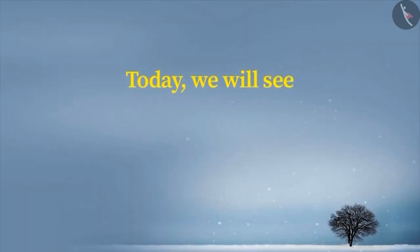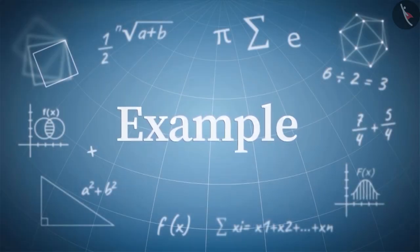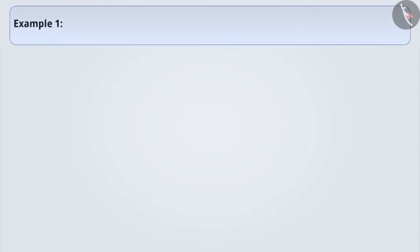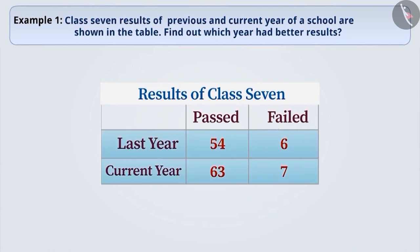Today, let's look at some examples of equivalent ratios. Class 7 results of the previous and current year of a school are shown in the table. Find out which year had better results.